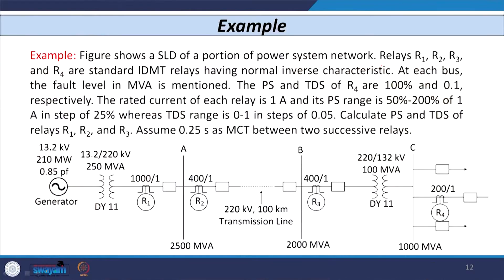With this background, we have discussed the rules for deciding the plug setting and time dial setting of phase and ground relays. We have also discussed the three overcurrent, one earth fault scheme and the two overcurrent, one earth fault scheme. Now let us solve one example — basically for deciding the settings of different relays and how to coordinate phase overcurrent relays.